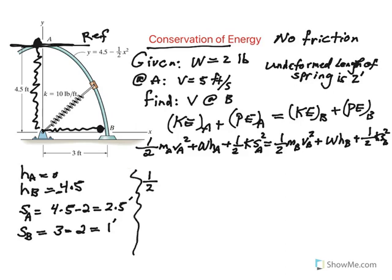So, one half. Be careful now. Mass is 2 divided by 32.2 times velocity of A, which is given to be 5 feet per second squared. H sub A is 0, so that term is gone, plus one half K. K value, as you can see in the picture, is 10 pounds per foot. S sub A is 2.5 squared. That takes care of the left-hand side.